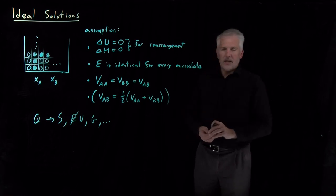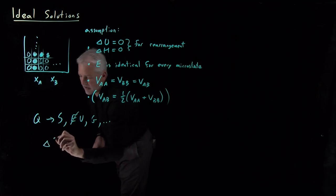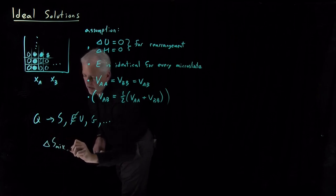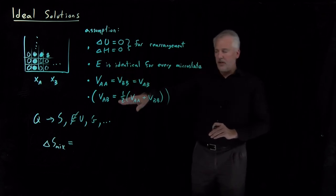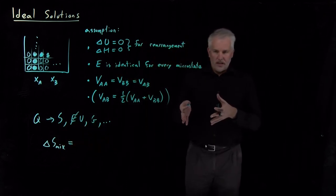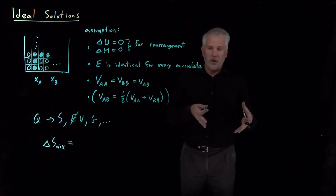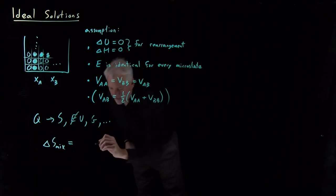We've actually already done some of that already. We have written, in particular for a lattice model involving fluids, we've already done the work of deriving what is the entropy of mixing when I take a pure A liquid and a pure B liquid and I mix them together in a lattice model. We've seen already that that is equal to